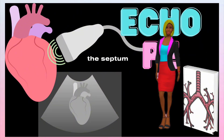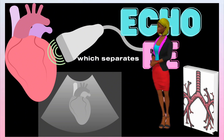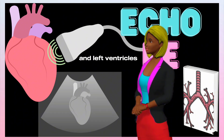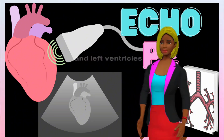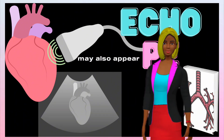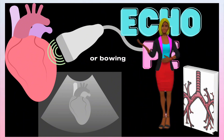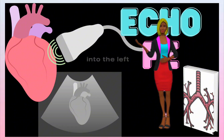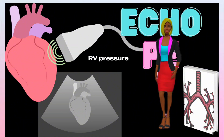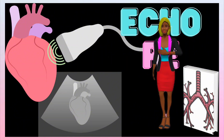The septum, which separates the right and left ventricles, may also appear flattened or bowing into the left ventricle due to increased RV pressure.